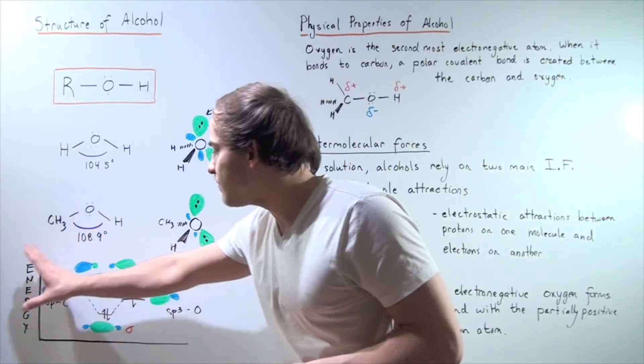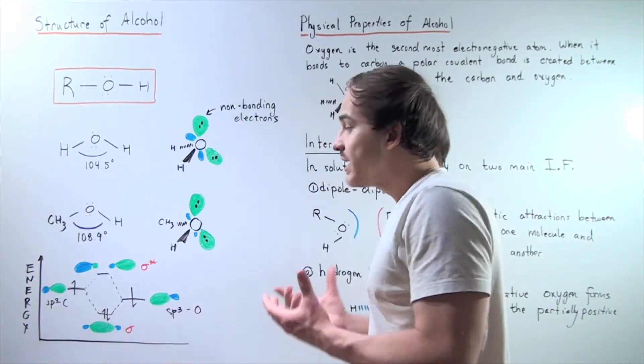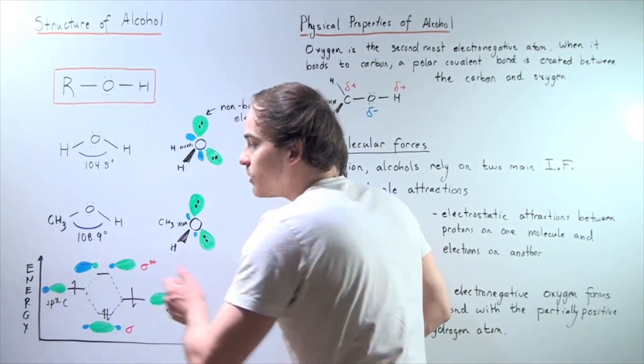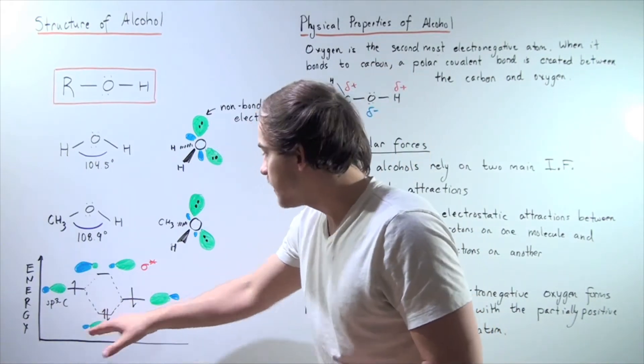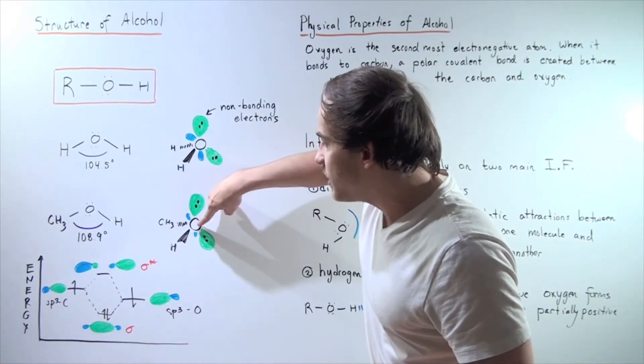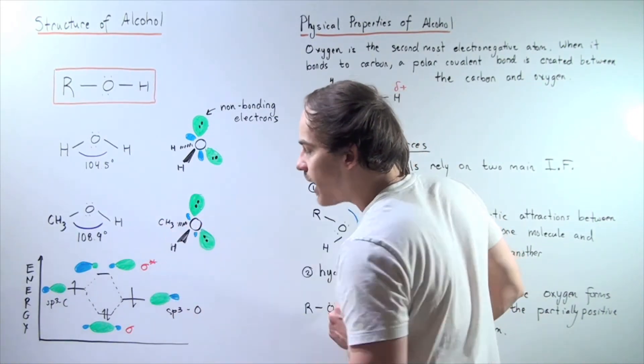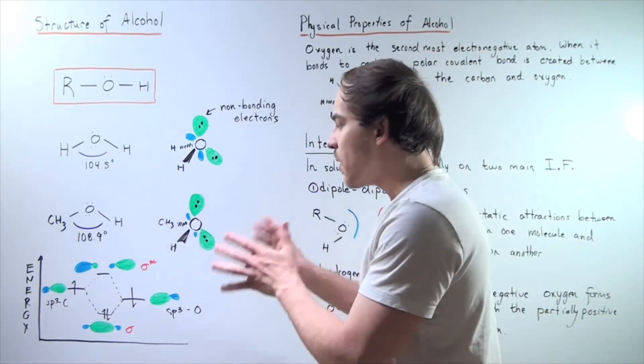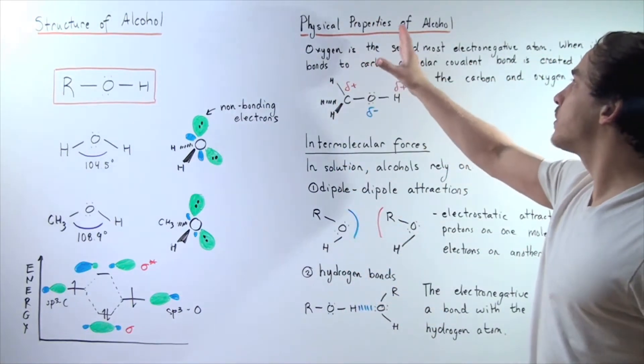Here we have the energy diagram in which the oxygen orbital combines with the carbon orbital to form our molecular orbital. This here is the orbital that we see between the oxygen and the carbon atom in this carbon-oxygen bond. Now that we spoke about structure, let's go on to the physical properties of alcohol.